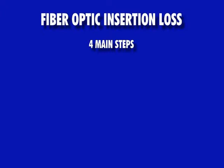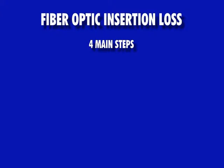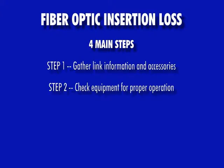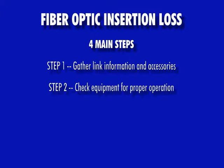There are four main steps in the process of measuring insertion loss of any fiber optic link. These steps are gathering link information and accessories, checking the equipment and accessories for proper operation, setting an optical reference — also called zeroing — and then taking insertion loss measurements.